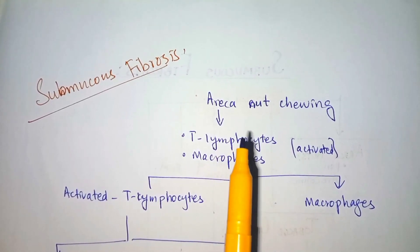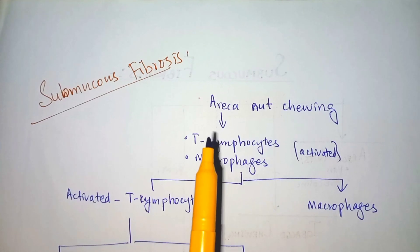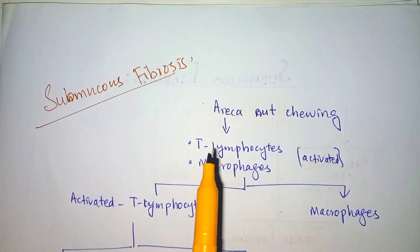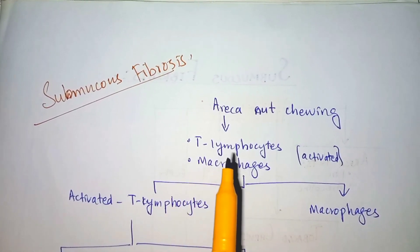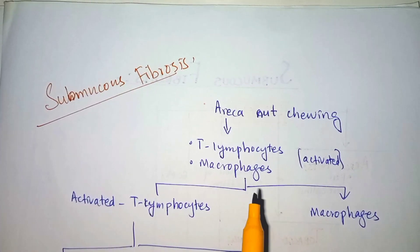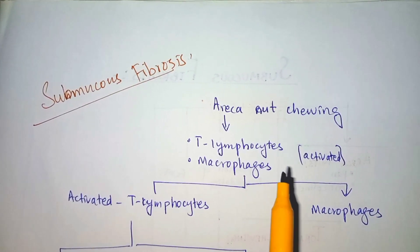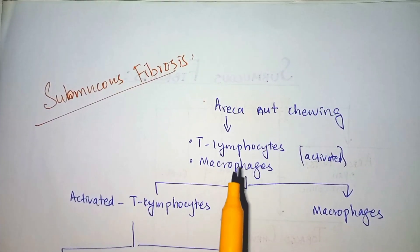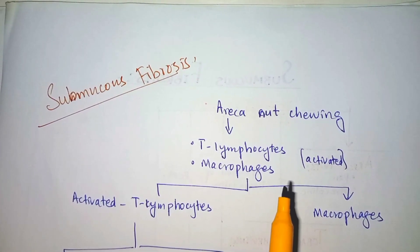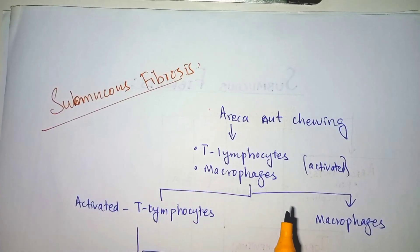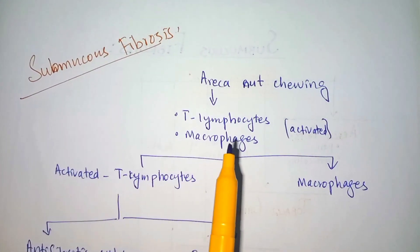The central ingredient in the areca nut is arecoline. Oral submucous fibrosis is considered a cell-mediated immune reaction to arecoline in the areca nuts. It may also reflect an interference in the deposition and degradation of the extracellular matrix in the oral cavity, resulting in submucous fibrosis. It may also reflect a localized collagen disorder or an autoimmune response in the oral cavity.